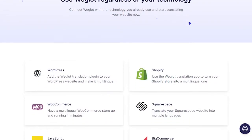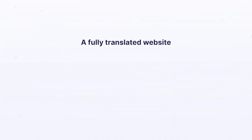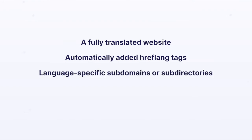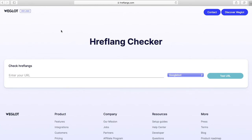It's simple, fast, and only takes a few clicks. You can find your specific integration here, which I've also linked below, and once installed you'll have a fully translated website, automatically added hreflang tags, language-specific subdomains or subdirectories, and plenty more to help your website reach international audiences. If you want to see if your hreflang tags have been added correctly, you can also check out our brand new hreflang checker tool, available here — it's a really easy way to see if everything is set up correctly.